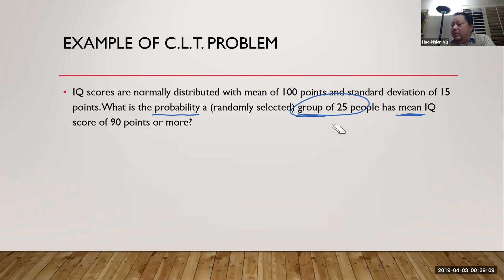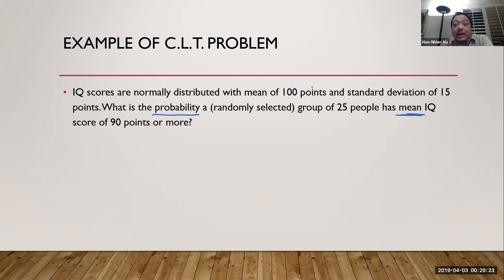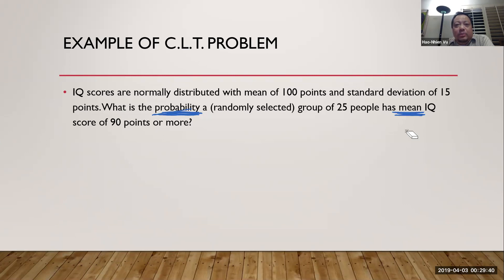The first thing is to recognize this is a CLT problem. On exams you won't get a label saying CLT problem — you have to recognize it. The way you recognize it: there's a group of 25 people (some kind of sample), and the problem asks about the probability regarding a mean. Probability regarding a mean is essentially what sampling distribution is for — so if you see that, you know it's a CLT problem.